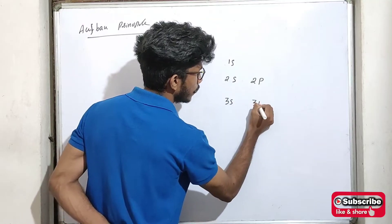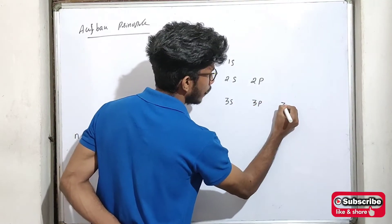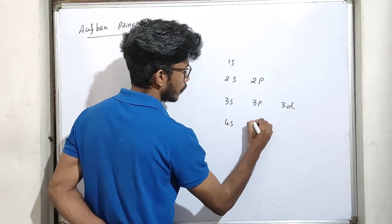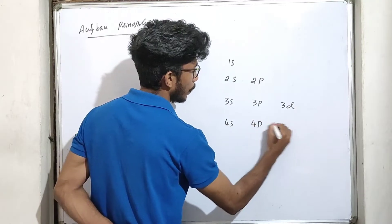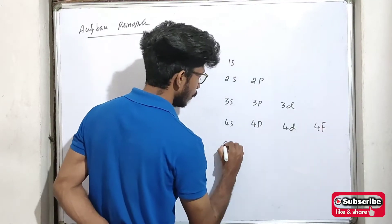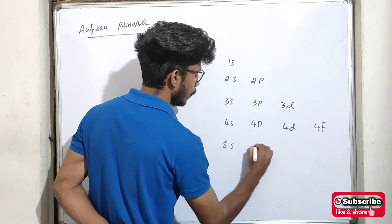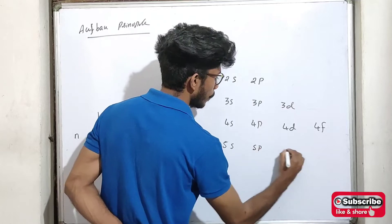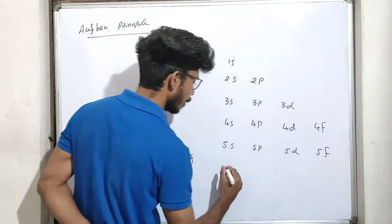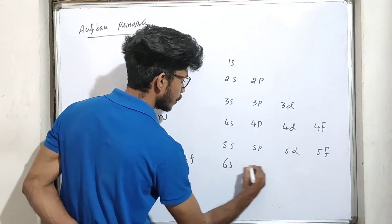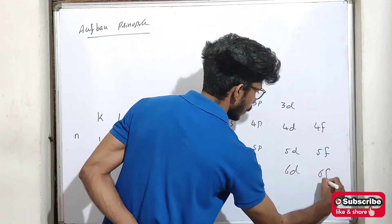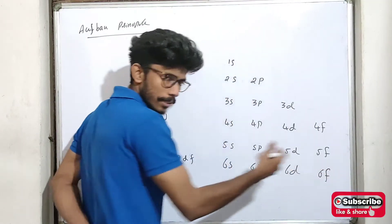The orbitals in order are: 3s, 3p, 3d; then 4s, 4p, 4d, 4f; then 5s, 5p, 5d, 5f; then 6s, 6p. These are all the orbitals.